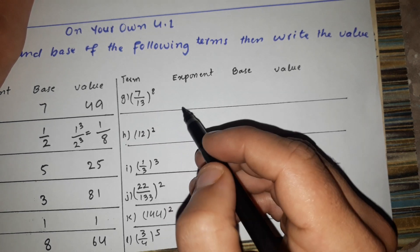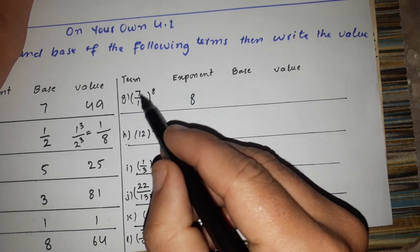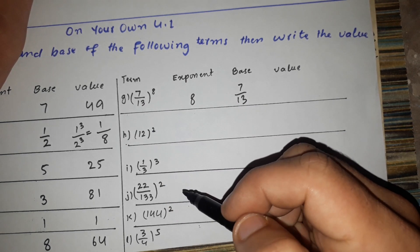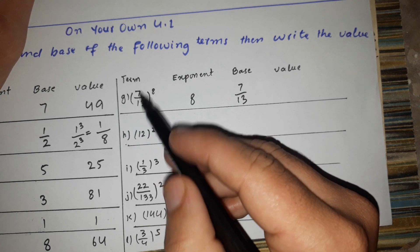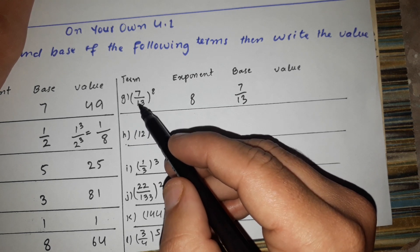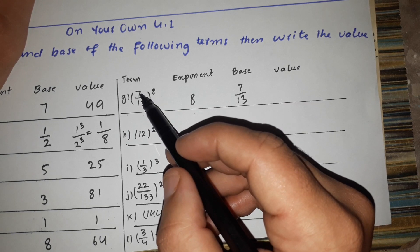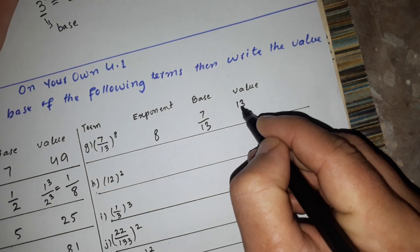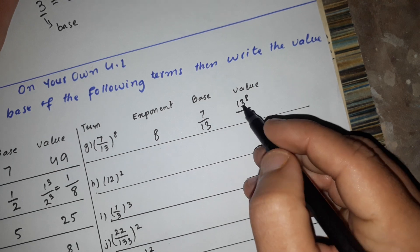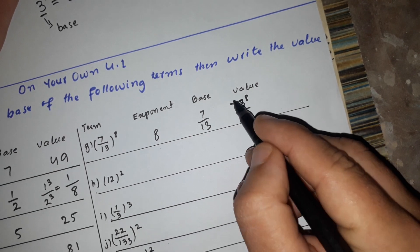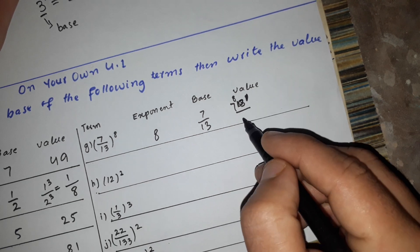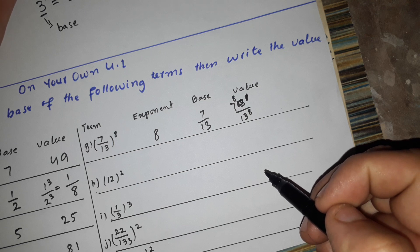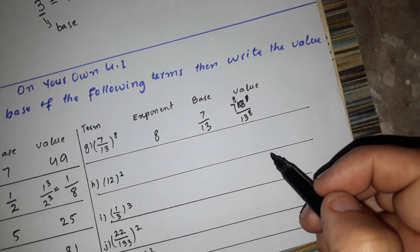The value is in fraction form — a rational number. The base is 7 and the base is 13. So for 7 to the power of 8, we write it in fraction form: 7 over 13 to the power of 8. We multiply 7 eight times and 13 eight times separately.